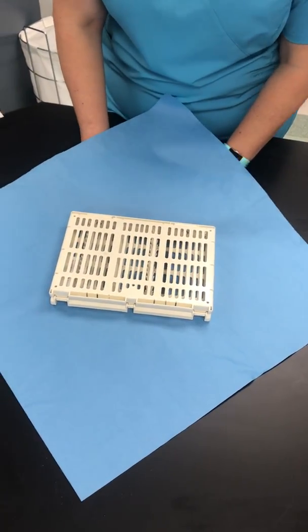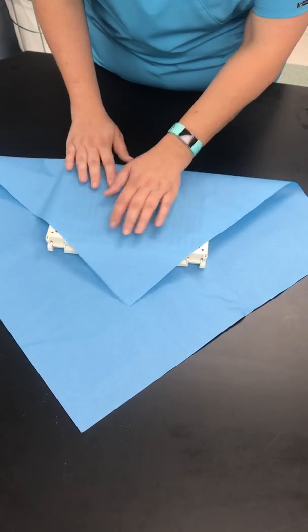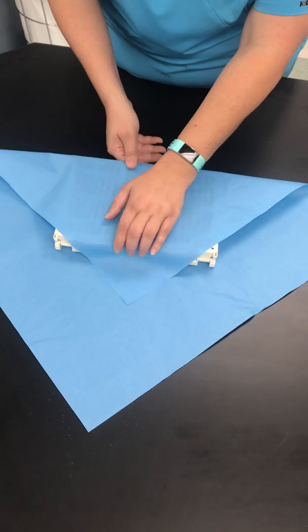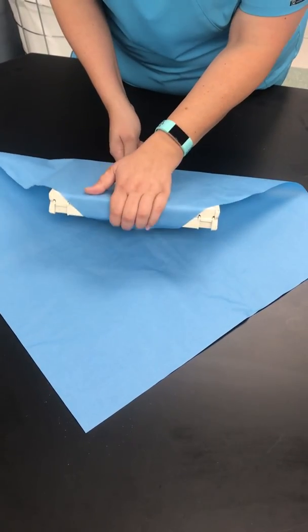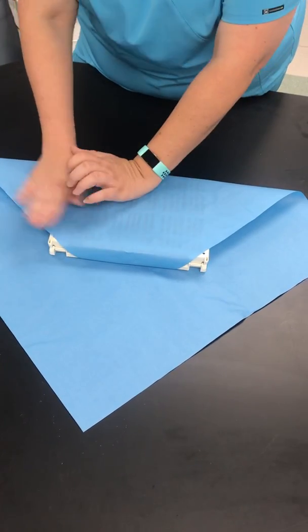So you want to fold up the bottom, hold the tab underneath, and then next you're gonna work on the wings on the side.